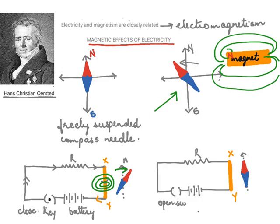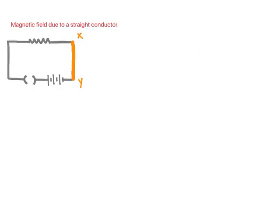If we open the switch again, the current stops flowing through XY and the compass needle returns back to its north-south direction. A magnetic field is produced around the conductor as long as there is current flowing through it.